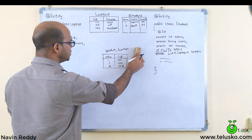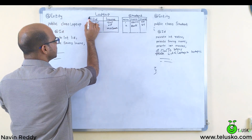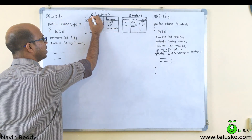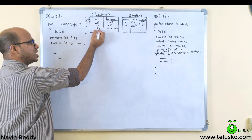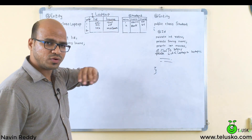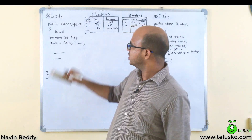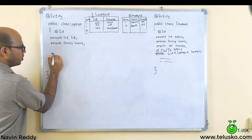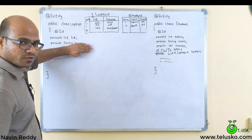But instead of creating a new mapping table, you could add a roll number column directly to the laptop table. Each laptop row references which student owns it — laptop 101 and 102 both belong to roll number 1, and laptop 103 belongs to roll number 2. However, for this to work, the Laptop class needs to declare a student field: private Student stud.